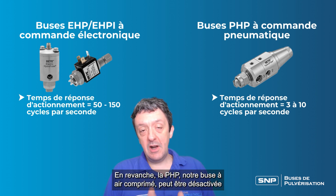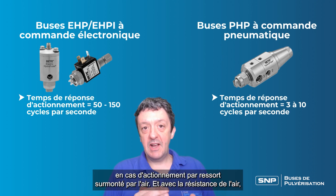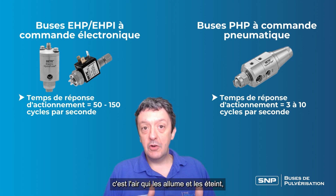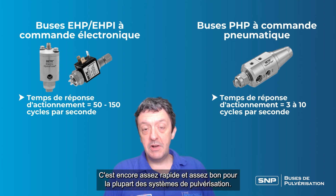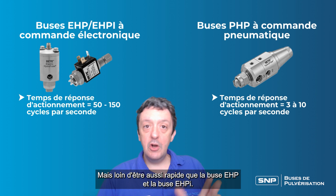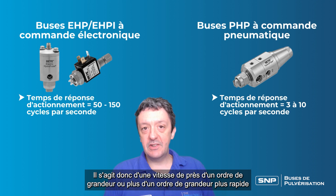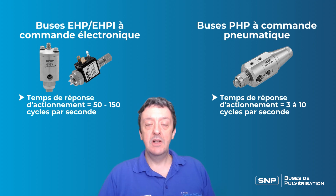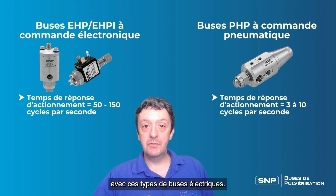In contrast, the PHP, our air actuated nozzle, can be cycled off under normal circumstances three times per second when using spring actuation overcome by air, and with air assistance shutting them both on and off, you can get that up to about 10 times per second. Still pretty fast for most spray systems, but nowhere near as fast as the EHP and EHPI nozzles — we're talking nearly an order of magnitude or over an order of magnitude faster with those electronic nozzles, and that allows us to do lots of different things with them.